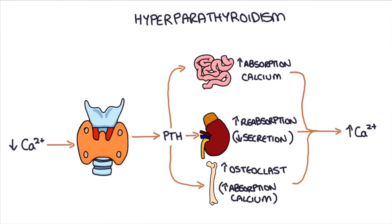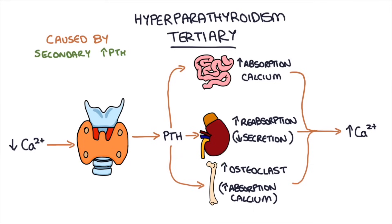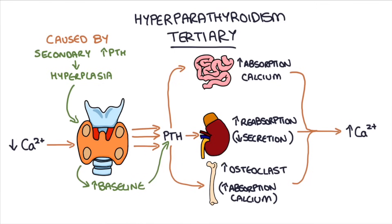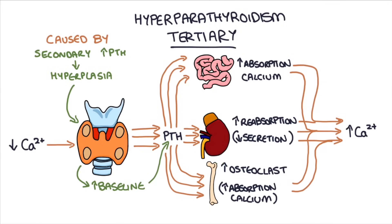The final cause of high parathyroid hormone is called tertiary hyperparathyroidism. This happens when secondary hyperparathyroidism continues for a long period of time, leading to a big hyperplasia of the glands. The baseline amount of parathyroid hormone being excreted by those glands increases dramatically. So when you treat the secondary hyperparathyroidism and remove the need for so much parathyroid hormone, the level remains high because those glands are so used to producing so much parathyroid hormone. This leads to high absorption of calcium in the intestines, kidneys, and bones, causing hypercalcemia — a high level of calcium in the blood.